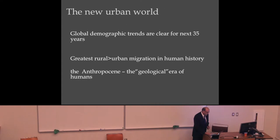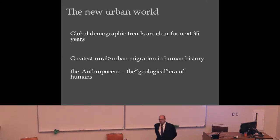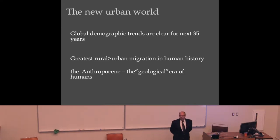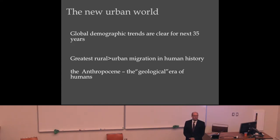The new urban world: most of you probably know that sometime around 2007, demographers reckoned the world had become predominantly urban — 51% of the world's population was urban. That's pretty significant in the history of the planet. This isn't just a special event — it's profound. And more importantly, it's not just a point in time but a trend that's going to continue.